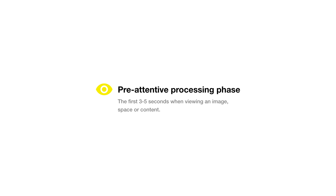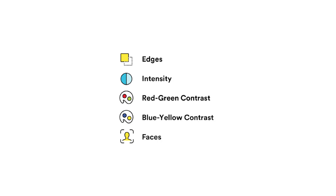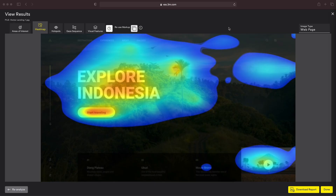During this three to five second window, our brain is looking for a complex relationship between five key visual elements that we are naturally attracted to: edges, intensity, red and green contrast, blue and yellow contrast, and faces.